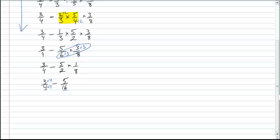So three-fourths, an equivalent fraction with a denominator of sixteen, is twelve-sixteenths minus five-sixteenths. Finally I'm at my last step, and I can go twelve minus five is seven-sixteenths, and that is your answer.